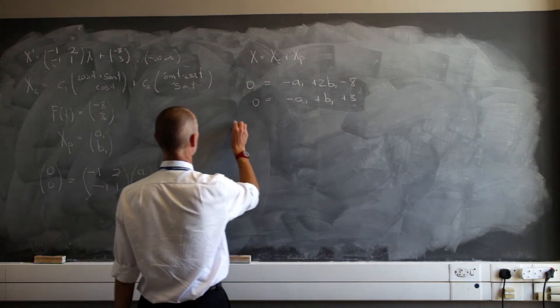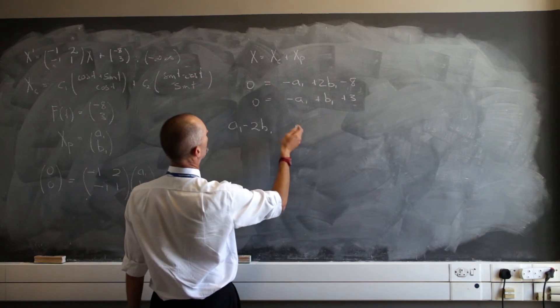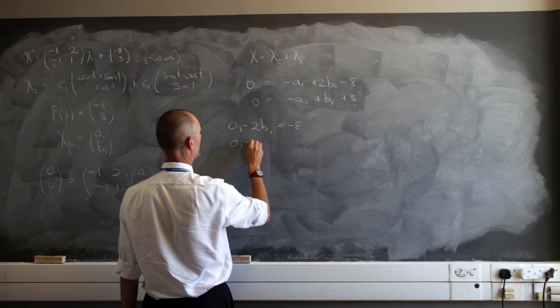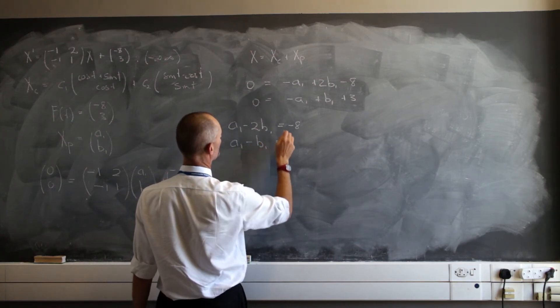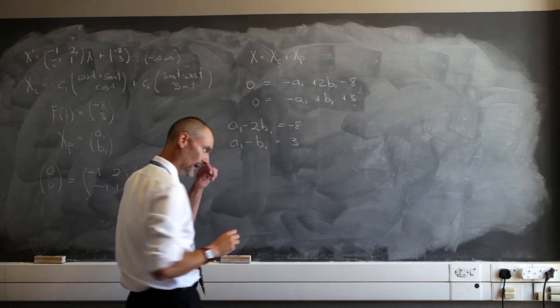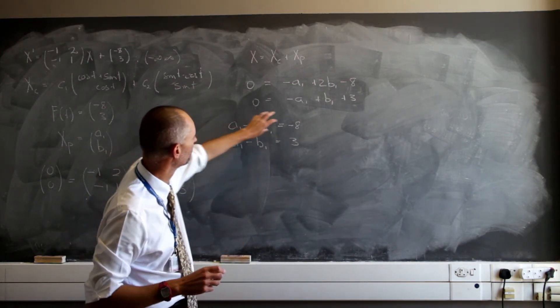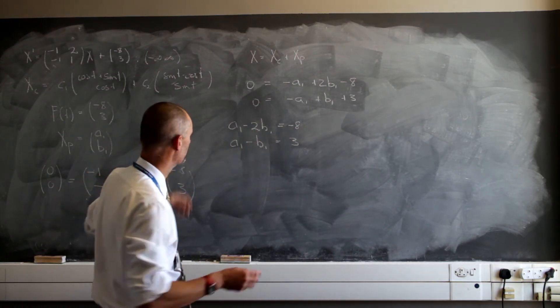If I just rewrite this, it would be a sub 1 minus 2 times b sub 1, and that's bringing it to the other side, equals negative 8. And on this side, a sub 1 minus b sub 1, and that is going to equal 3. And so there, as I said, I can quickly just get a sub 1 and substitute in there. But I can also just do it with linear algebra, can't I?